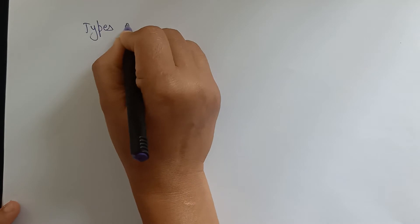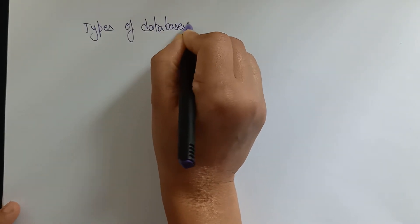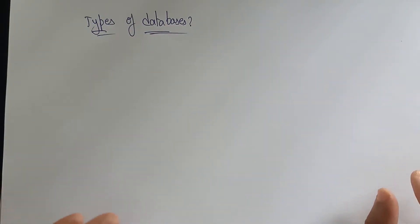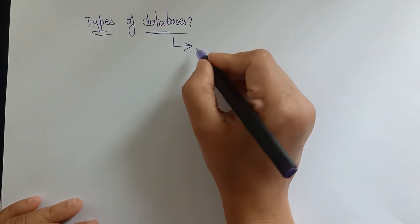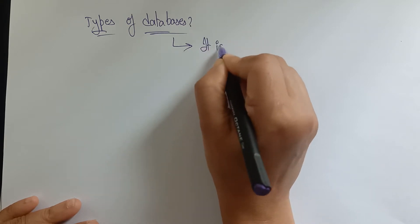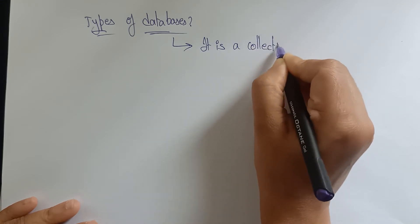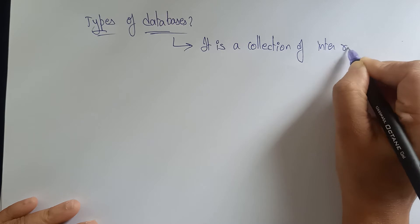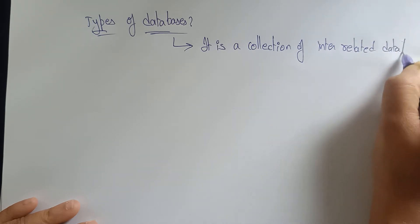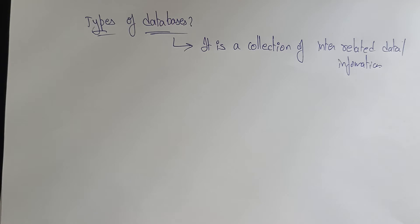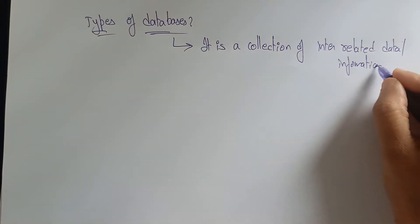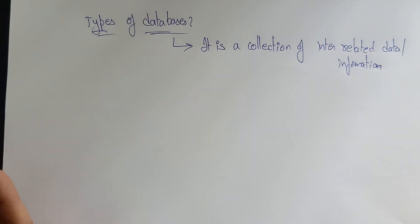Welcome students. Today in Oracle 19c, we will see the types of databases. First of all, what is a database? A database is nothing but a collection of interrelated data — that's the general definition. Data is simply raw data, and information is processed data, meaning we are performing operations on that data.